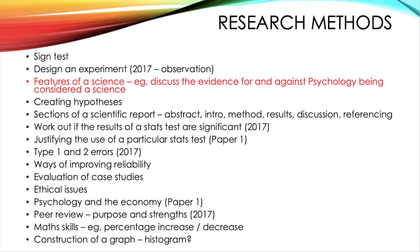You may also need to talk about type 1 and type 2 errors — there was a question on this in 2017. You may also need to talk about ways of improving reliability, the evaluation of case studies, ethical issues, and psychology and the economy, which did come up in paper 1 to do with the role of the father, but I wouldn't rule this out. You've also got peer review and the purpose and strengths of this, which we saw in 2017. There will always be questions testing your maths skills, so this time we could see a percentage increase or decrease question.